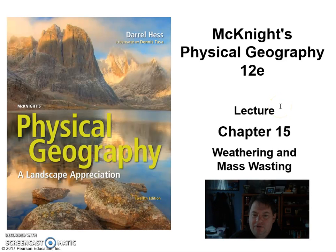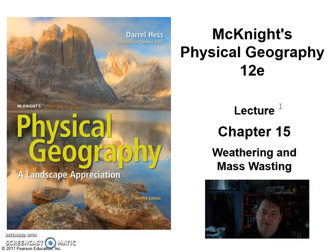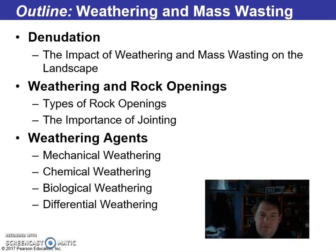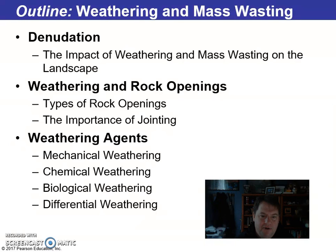Hi there, physical geographers. Here we are with weathering and mass wasting. We talked about soils, landforms, and internal processes. Now we're getting into how some of the internal processes function. The natural progression seems to fit pretty well in this class. We have denudation — the impact of weathering and mass wasting on the landscape — and we're going to run through our outline at a high level for this chapter.